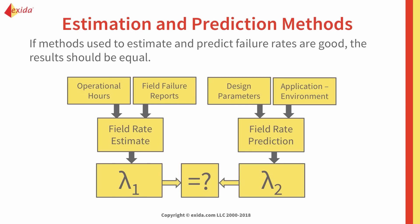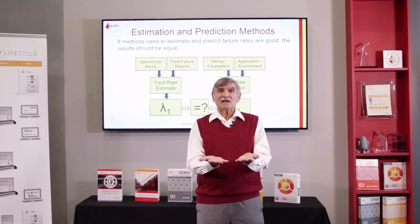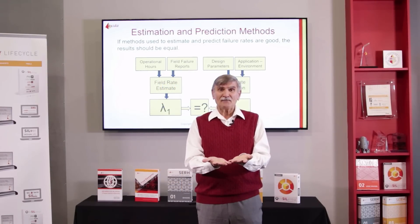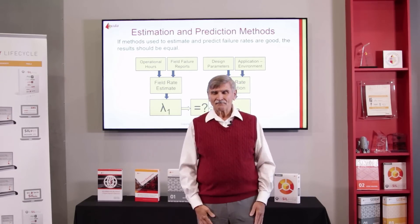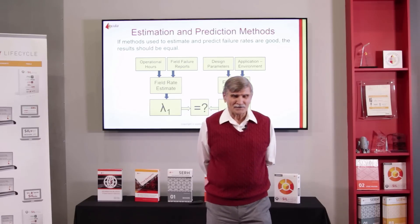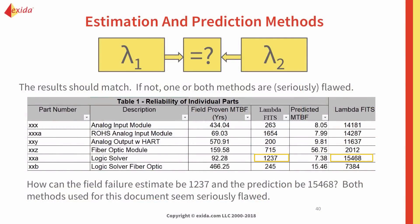Think about estimation and prediction. In part three, I showed you a sheet of paper where estimation gave us 1200 fits and prediction gave us 1500. If these methods were any good, estimation and prediction should give the same answer. Why don't they give us the same answer? And when they don't, it's no wonder Scott Adams makes up cartoons about failure rate data.